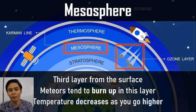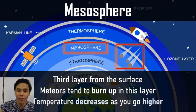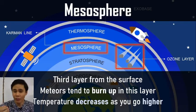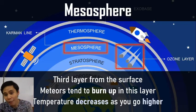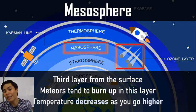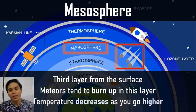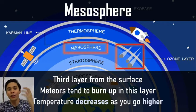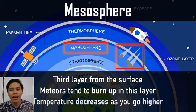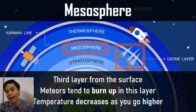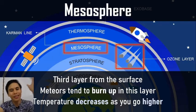Next is the mesosphere — the third layer from the surface — and it's where meteors tend to burn up. Your meteor showers are generally visible due to how they burn up in the mesosphere; they burn up there because there's just enough air molecules for meteors to build up friction and heat. Temperature in the mesosphere decreases as you go higher because there's no longer any ozone layer, and energy is lost as you go higher since there are fewer molecules to trap it.